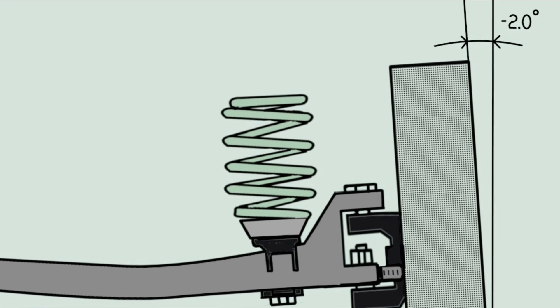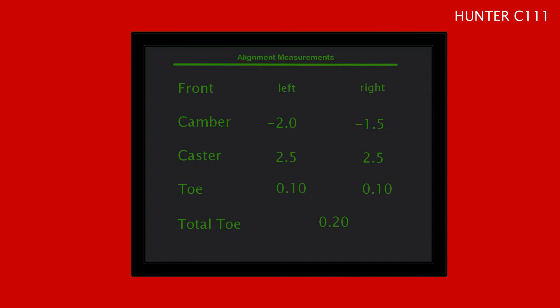So as the spring sacks down, camber goes negative. In this illustration we are looking at the very typical 2 degree camber decrease.